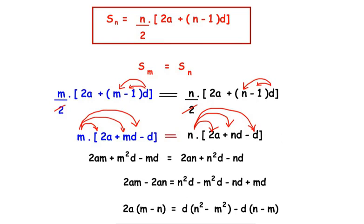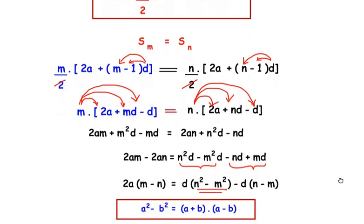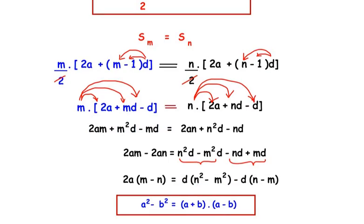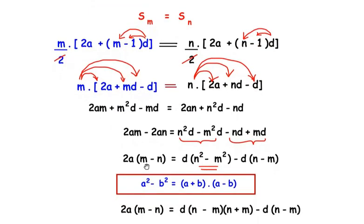On the right hand side, we group the first two terms together and the last two terms together. In the first two terms, D is a common factor, so we take it out and n squared minus m squared remains in the bracket. From the last two terms, we take negative D as a common factor, leaving n minus m in the bracket. The expression n squared minus m squared is an algebraic identity: a squared minus b squared equals a plus b times a minus b. Applying this identity, the left hand side remains 2A times m minus n, and the right hand side becomes D times n minus m times n plus m, minus D times n minus m.